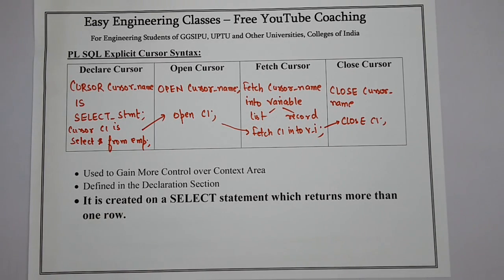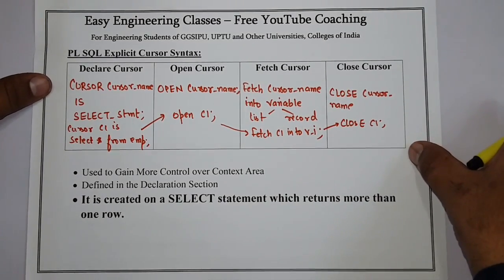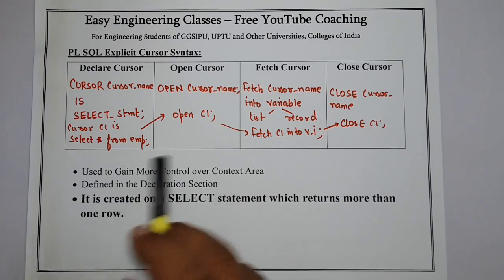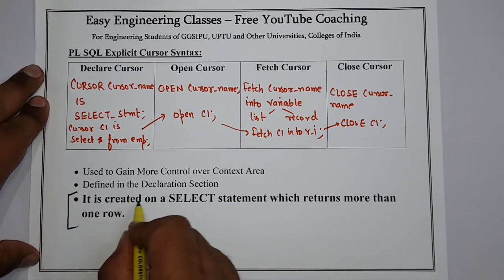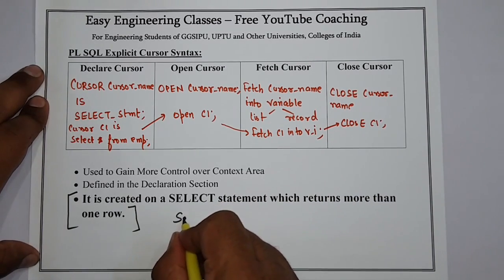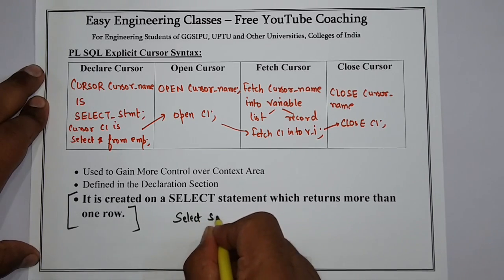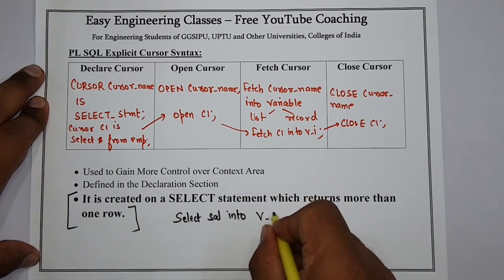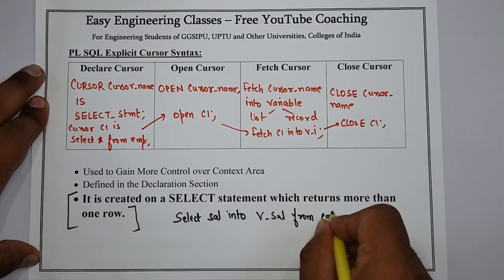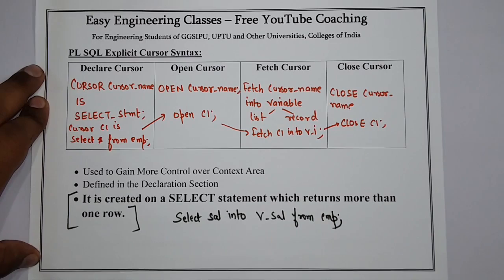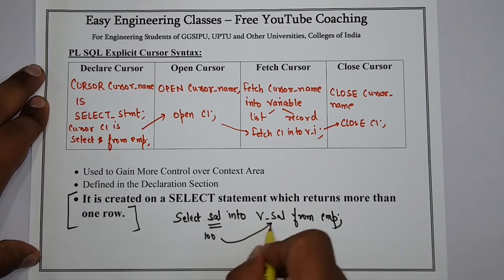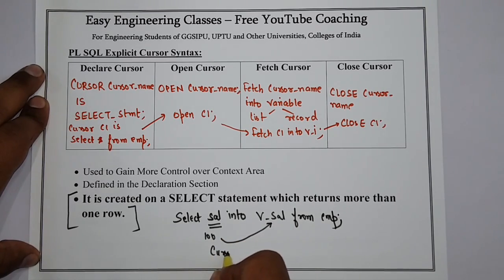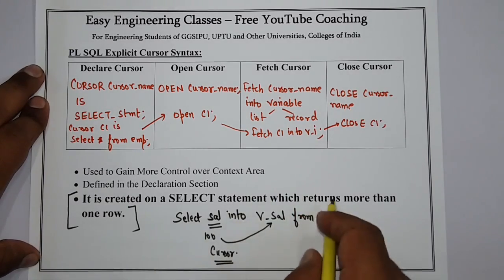PL/SQL cursors are used to gain more control over the context area, because without explicit cursors you don't have any control. A cursor is defined in the declaration section and is created on a SELECT statement that returns more than one row. For example, writing SELECT salary INTO v_salary FROM EMP can cause a 'too many rows' error if the table has 100 rows, since you can't store multiple rows in a single variable. That is when you need a cursor.